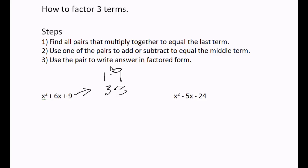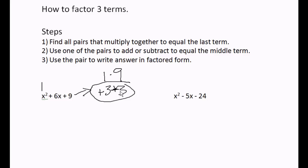Step two: find one of these pairs by putting pluses and minuses in front of them to try to equal the middle term. The middle term is six. If I put a plus three in front of this and a plus three in front of this — without multiplying, just adding — a positive three and a positive three is a positive six. They do equal the middle term.